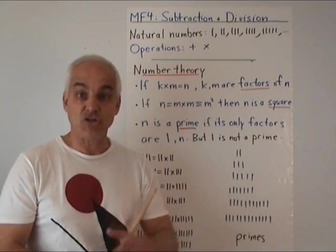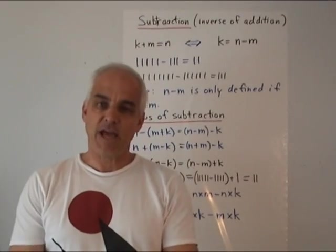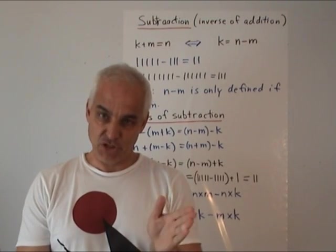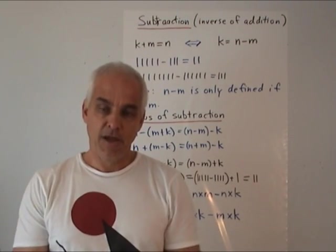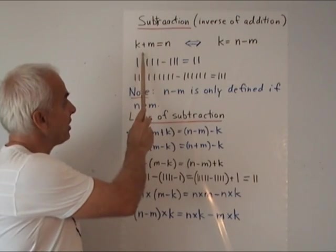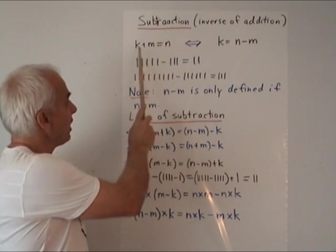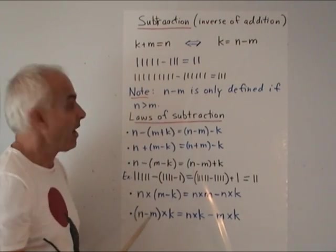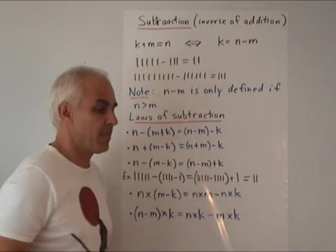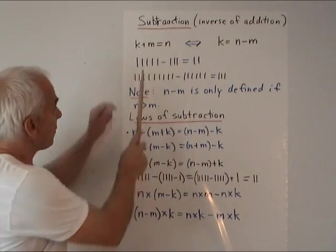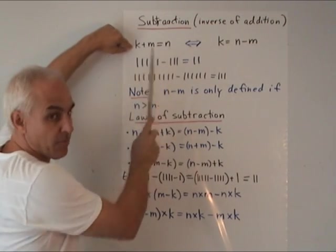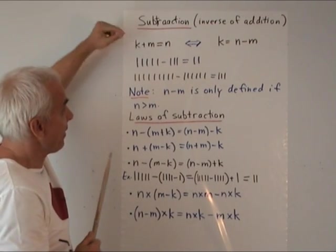Now let's go on to subtraction and division. Subtraction and division are inverse operations to our basic operations of addition and multiplication. The easiest one is subtraction, so let's do that one first. We define subtraction in terms of addition: if K plus M equals N, then we say that K equals N minus M.